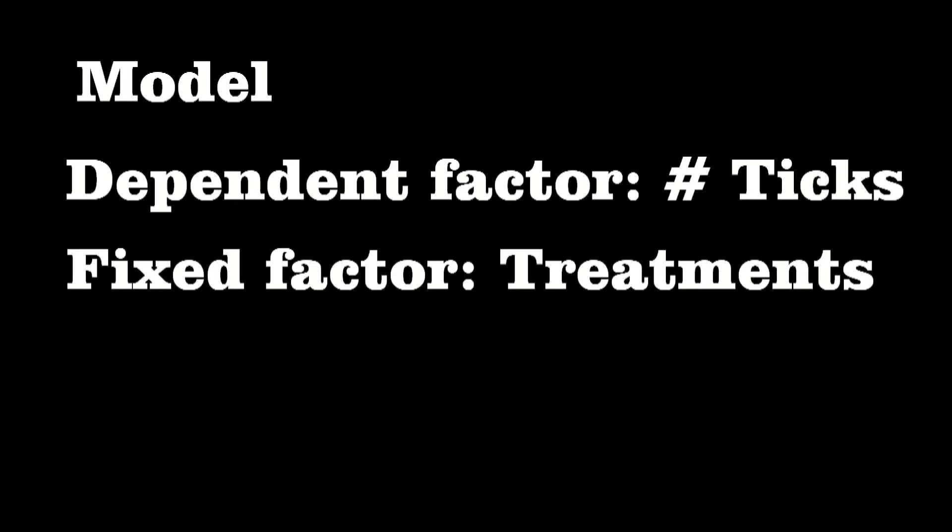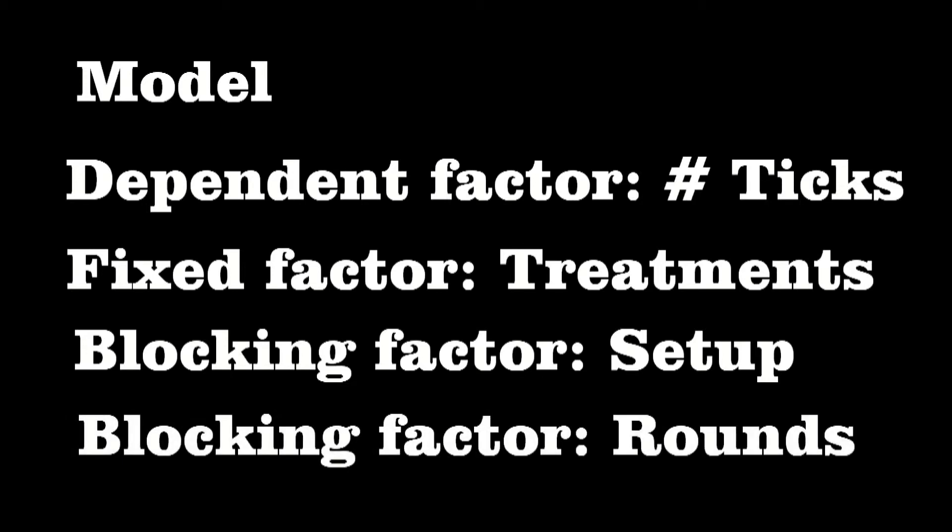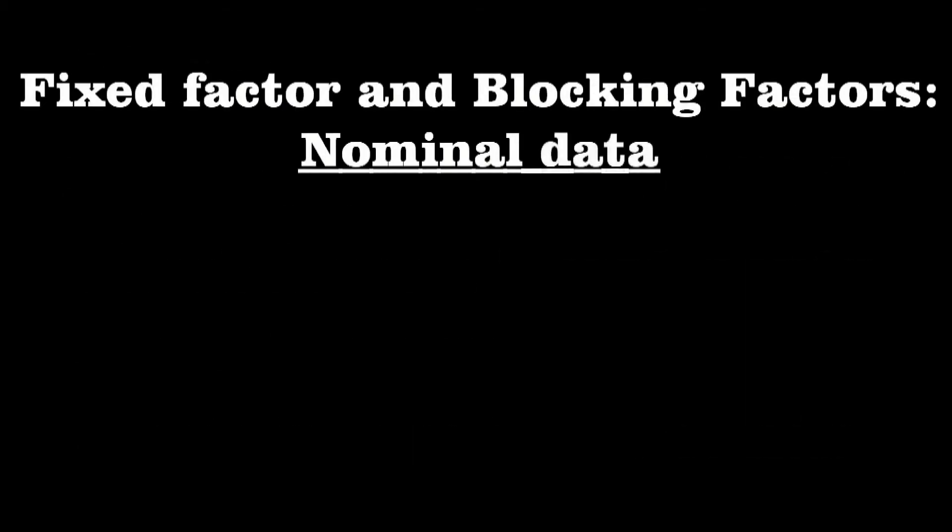As mentioned before, the experiment contains four experimental setups, which are used as a blocking factor in the analysis. The four different experimental rounds are also included as a blocking factor. By including this blocking factor, variation due to the different experimental setups and rounds can be accounted for. The fixed factor and the blocking factors are all nominal data.